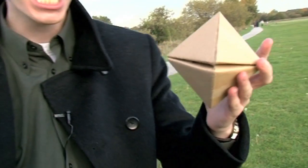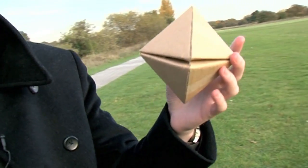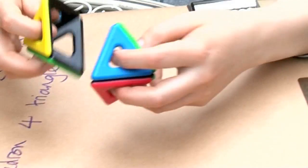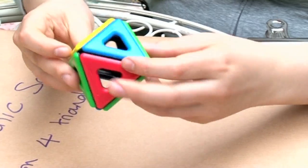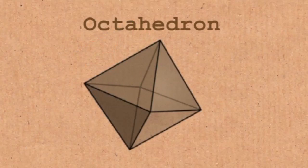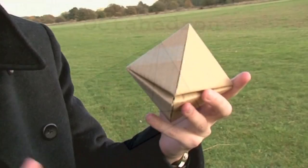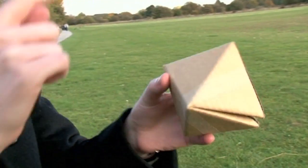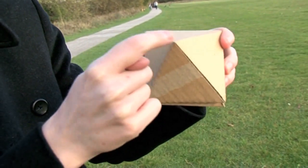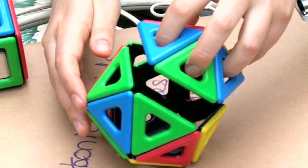This is the octahedron. It has eight triangular faces. If I get two of those and stick them together, you'll see that I also get the same corner everywhere, and this is an octahedron. Unlike our tetrahedron, this has four triangles meeting at each corner.